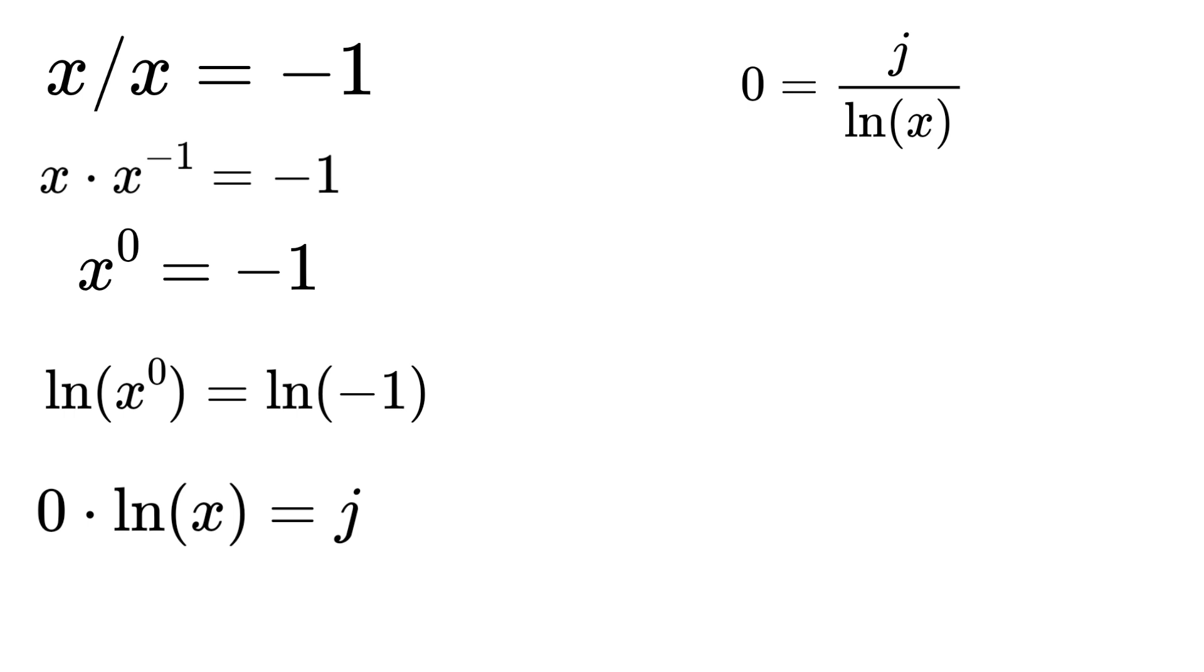Here we can move the virtual unit j to the left side, and the equation becomes zero divided by j equals one over log x. Since zero divided by j is zero, our equation simplifies as zero equals one over log x.